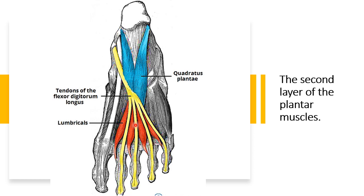Also passing through the second layer is the tendon of flexor digitorum longus — this is an extrinsic muscle passing through this layer, shown in yellow. The quadratus plantae is superior to the flexor digitorum longus tendon.